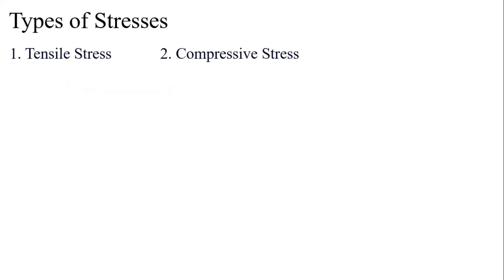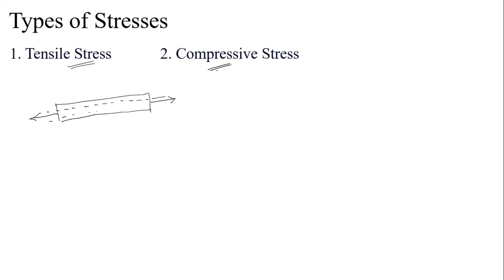The types of stresses are majorly divided into two: tensile stress and compressive stress. When a cross section is subjected to two equal and opposite pulls, the body tends to increase in length. After applying these two equal pulling forces, the body is subjected to tensile forces.